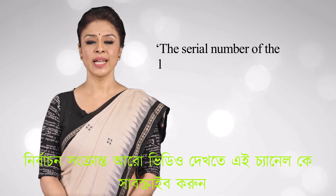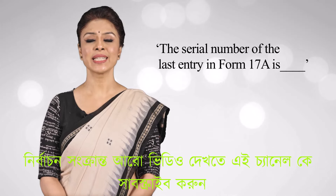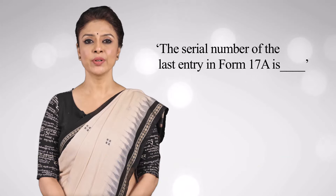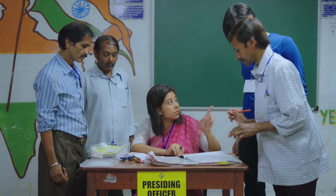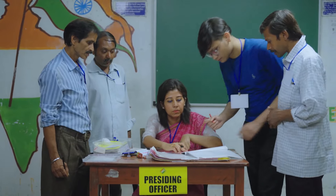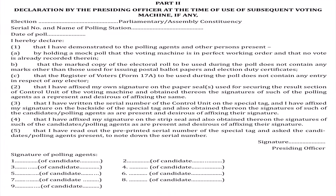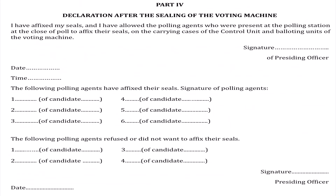Serial number of the last entry in Form 17A is dash. Ebon g tarnmi chhe shoy koro. Ekhane shomhushta polling agent ra shoy gorde. Shab shesh e PRO declaration Part 4 e shoy kore, shekhan e polling agent dhe shoy.